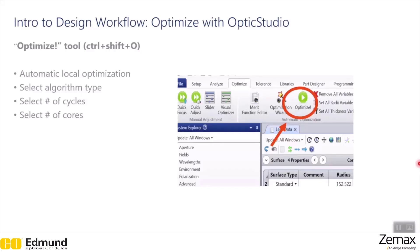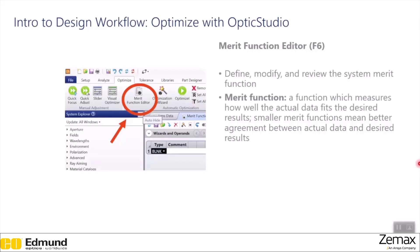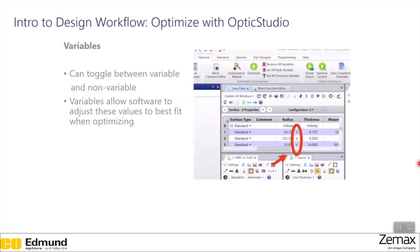Next, we have the Merit Function Editor, accessible via the F6 key on your keyboard. This allows you to define, modify, and review the system Merit Function. The Merit Function measures how well the actual data fits the desired results — smaller Merit Function values mean better agreement between actual and desired data. Every surface can be toggled between variable and non-variable; setting a surface to variable allows the software to automatically adjust values when optimizing.